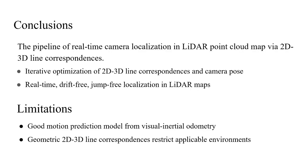In conclusion, we propose a pipeline for real-time camera localization in LiDAR maps using 2D-3D line correspondence. It jointly optimizes 2D-3D line correspondence and camera pose using pose prediction from visual-inertial odometry, achieving real-time, drift-free, and jump-free localization in LiDAR maps. This method has some limitations: we need good motion prediction from visual-inertial odometry, and we need a structured environment to obtain geometric 2D-3D line correspondence, so it is not suitable for unstructured wild environments.